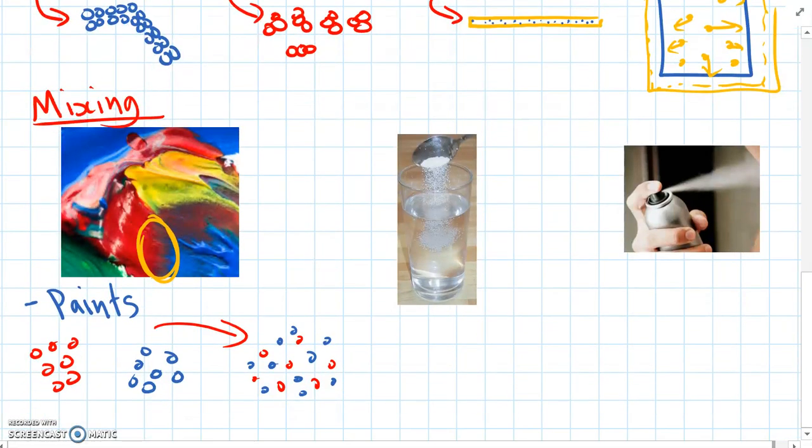And actually dissolving things in a liquid is the same as mixing. So if you ever pour sugar into your coffee or tea or just some water, all the sugar particles mix together and combine with the water.